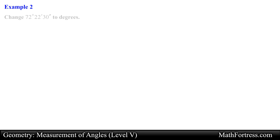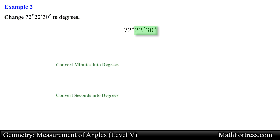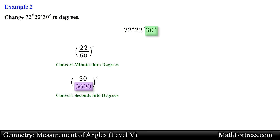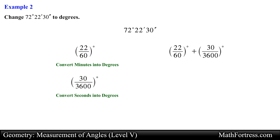Let's take a look at the next problem. Change 72 degrees 22 minutes 30 seconds to degrees. In this problem we need to convert the angle written in degrees-minutes-seconds into an equivalent degree measurement. To convert the minutes we divide them by 60, and to convert the seconds we divide them by 3600. This gives us an equivalent fractional degree measurement for the minutes and seconds, and then we add them with the integer degree measurement.